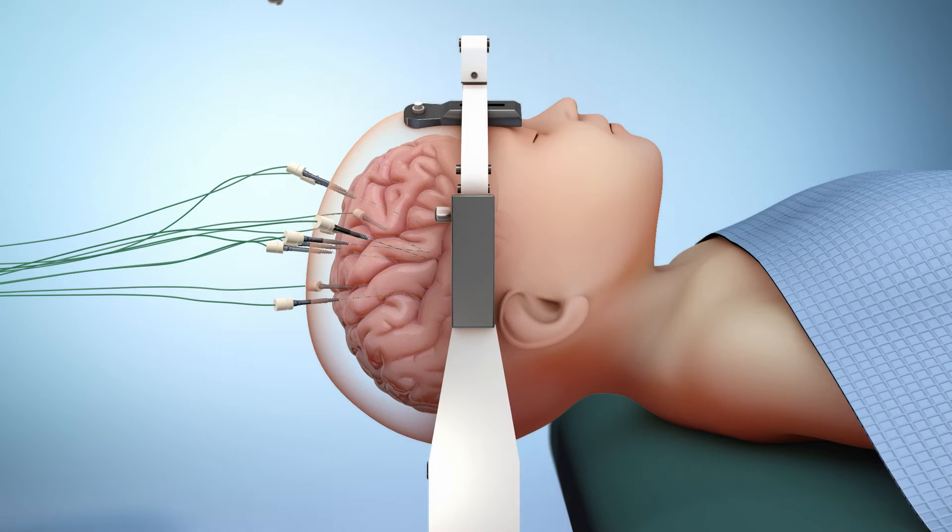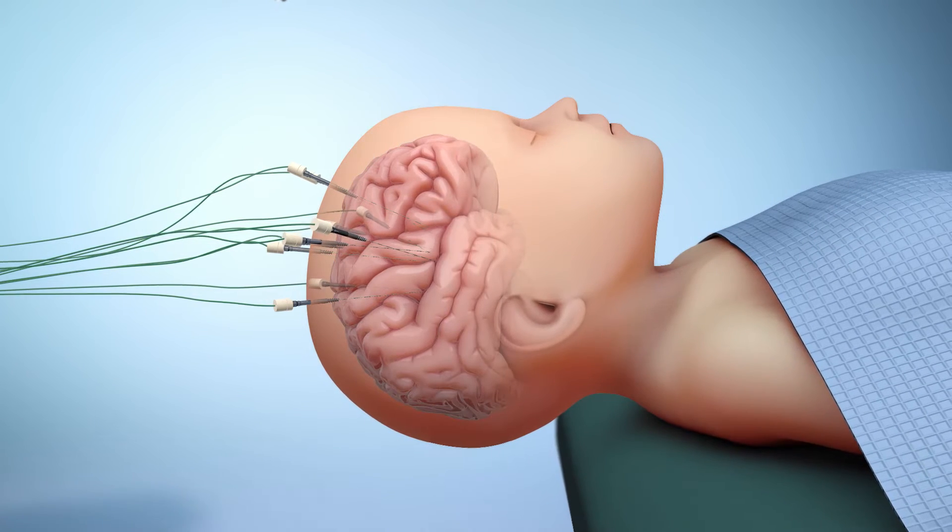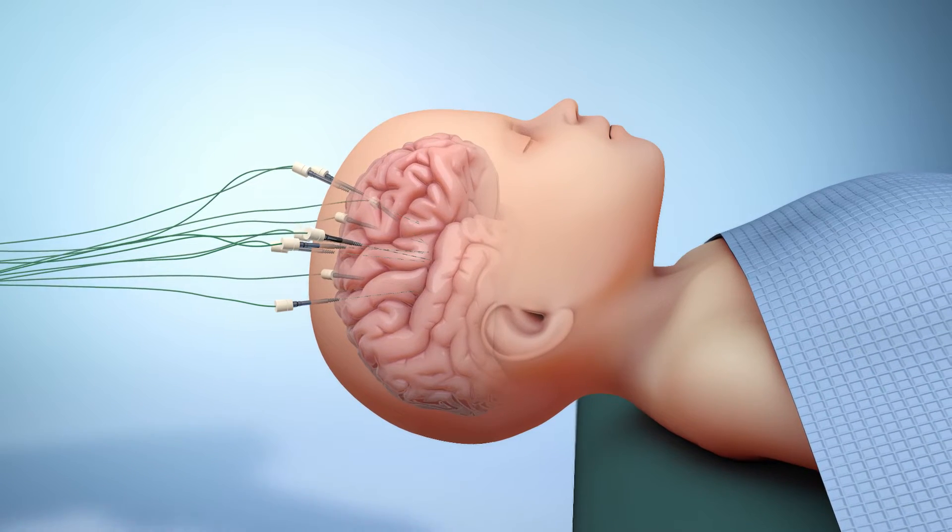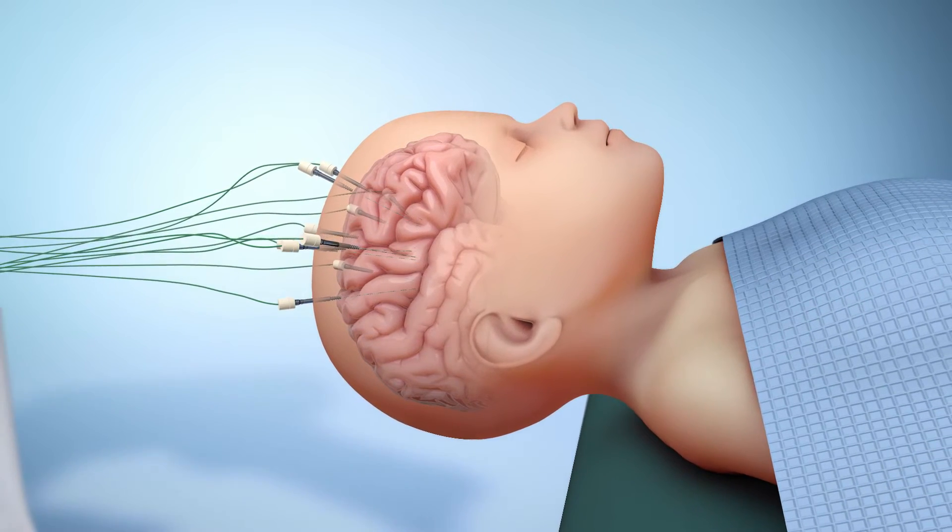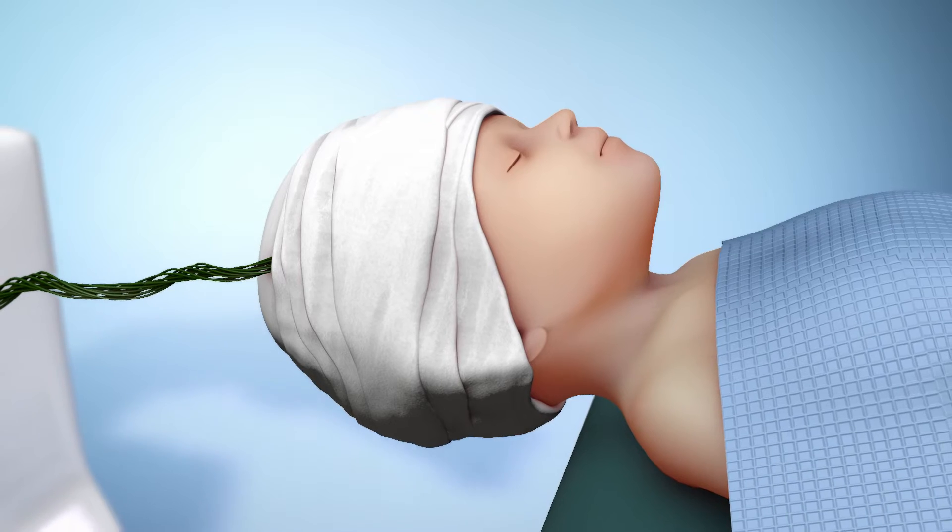To end the procedure, the surgeon will remove the robot and securing device from the patient, but the electrodes will remain in place. The head will be wrapped with a bandage.